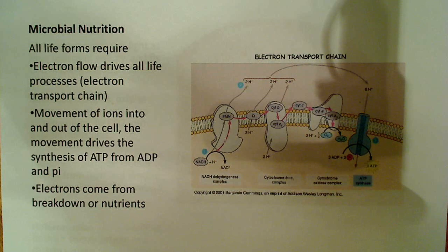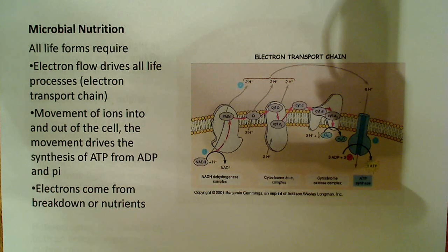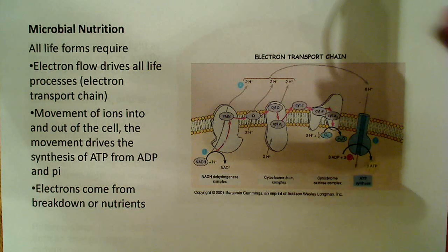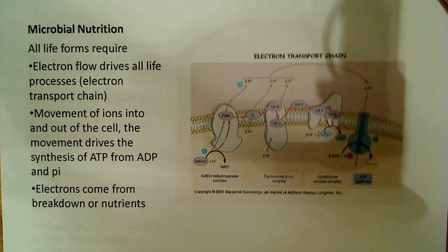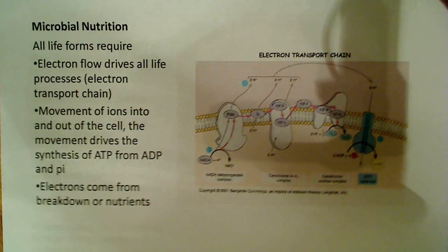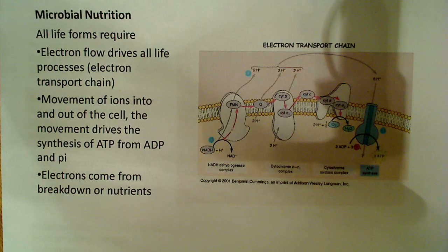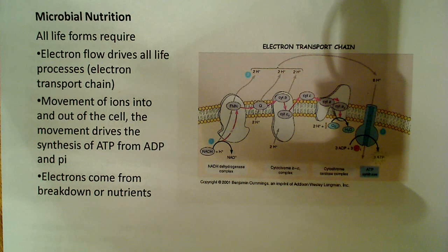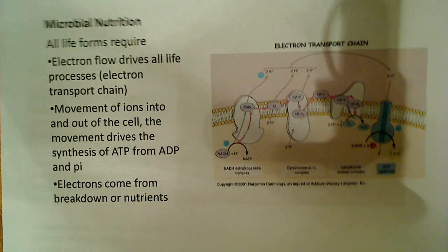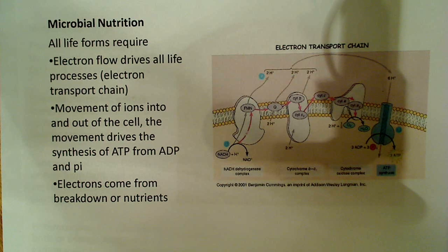Where those electrons come from is another one of the fundamental differences. Some bacteria are photoautotrophs, meaning they derive their electrons from the breakdown of water or hydrogen sulfide or something along those lines. But others are not. What I want to say here is that microbial nutrition is diverse — microbes can use a lot of different things to derive their energy and also their electrons.